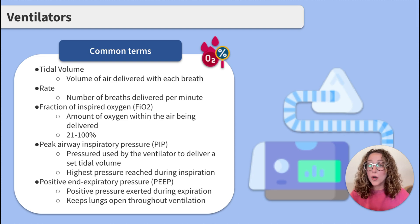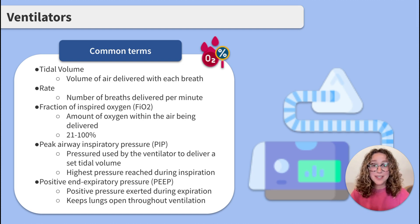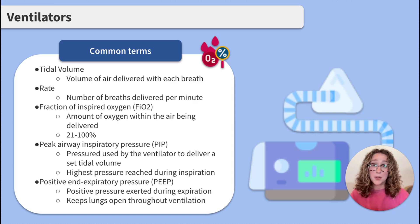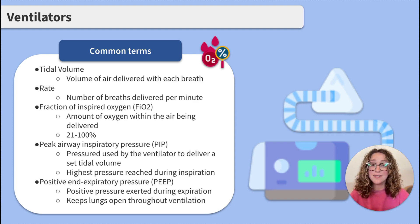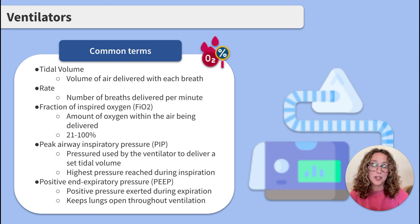Tidal volume is the volume of air being delivered with each breath. Rate is the number of breaths being delivered per minute. FiO2 is the percentage of oxygen within the air being delivered to the client, ranging from 21% — the amount of oxygen in room air — to 100% oxygen. PIP is the pressure used by the ventilator to deliver a set tidal volume and is the highest pressure reached during inspiration. PEEP is the positive pressure exerted during expiration — think of PEEP as what helps keep the lungs open during a ventilation cycle.